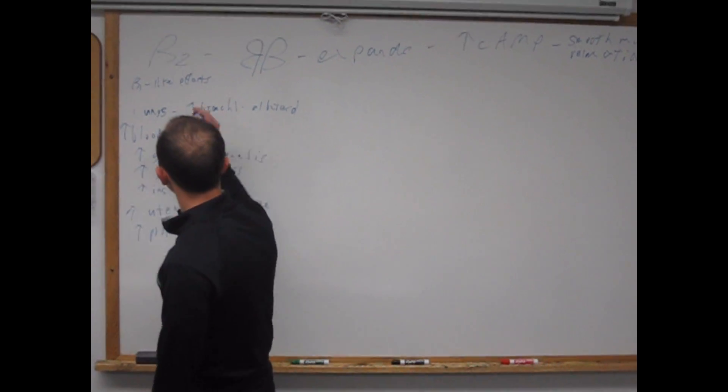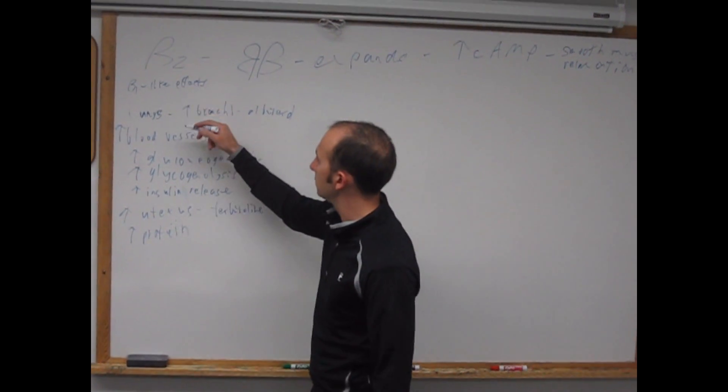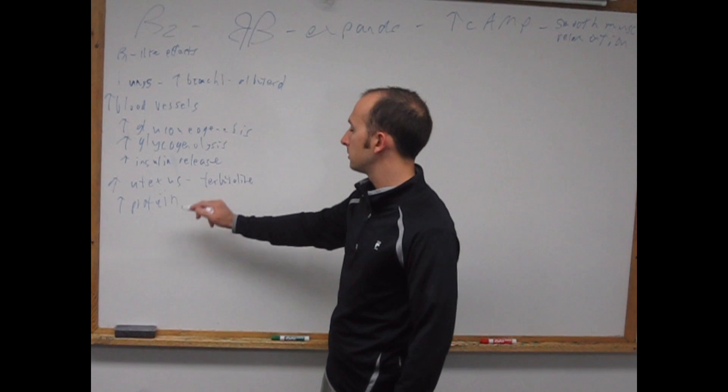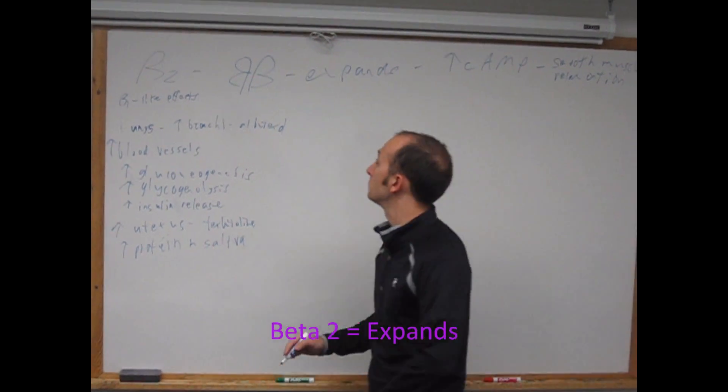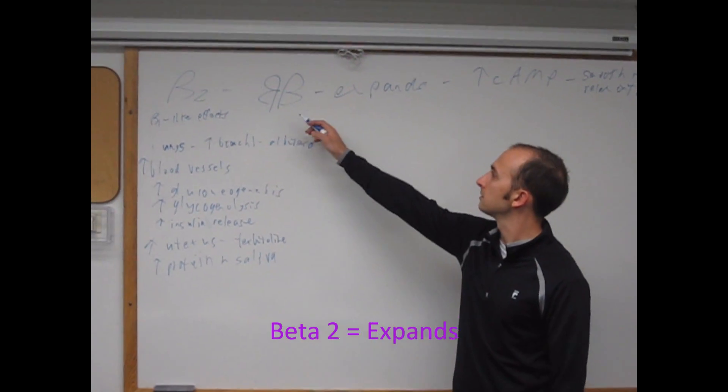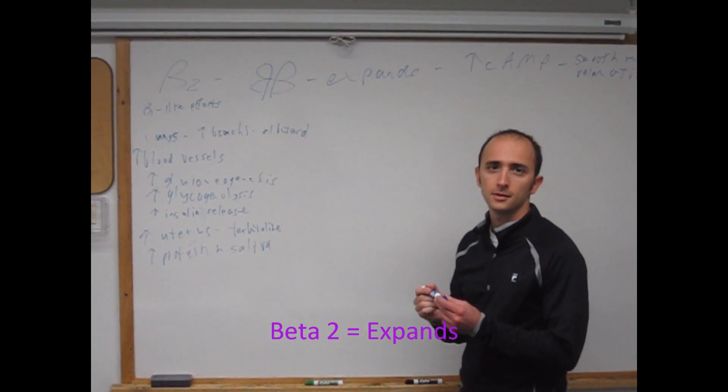So we have beta 1 effects, lung effects, blood vessel, glucose, uterus, and expanding saliva. Good. So beta 2 expands. As always, thank you.